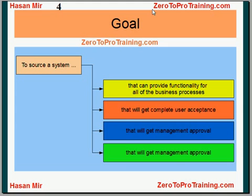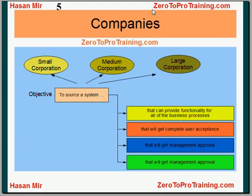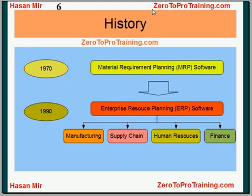The goal of the ERP system selection process is the same for all companies, irrespective of whether it is a multinational multi-million dollar organization or a small company with single-digit million turnover. In the mid-1970s there was widespread introduction of computer packages.